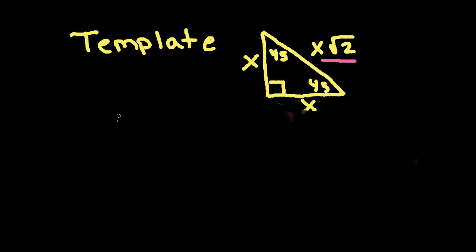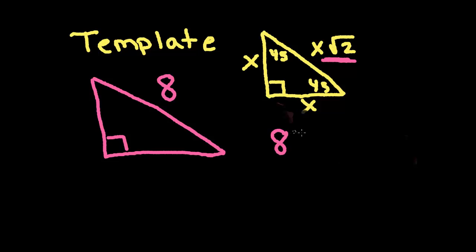All right. For the next one, let's say that this side is an 8. So, that, again, is this side. So, I have to set it equal to the template value. So 8 is equal to x square root 2. And, I need to find x because those are the two missing values. So, to solve for x, I would divide by square root 2. So x is equal to 8 over square root 2.